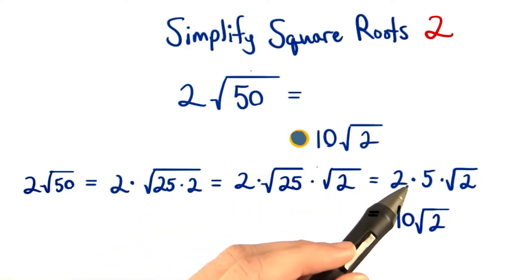We know the square root of 25 is 5, so we have 2 times 5, which is 10, times the square root of 2.